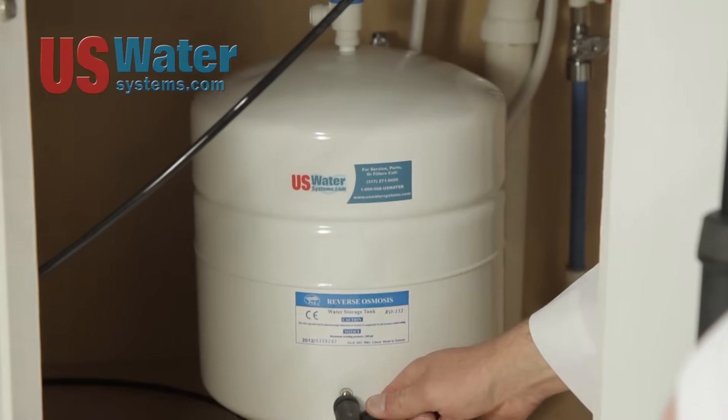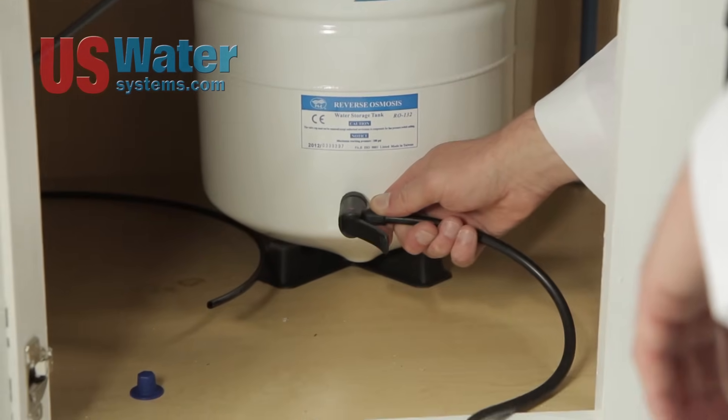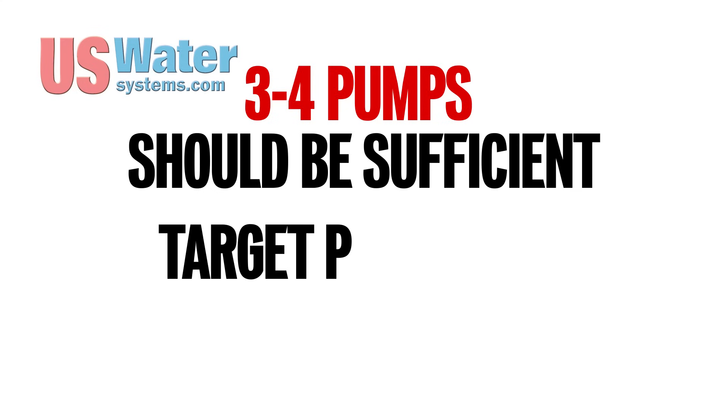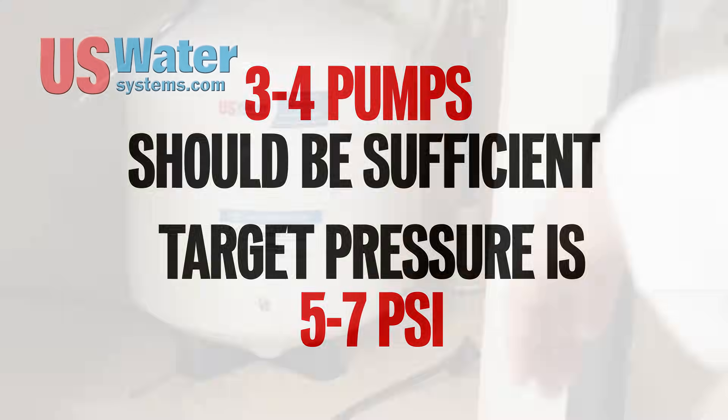Next step is to hook your bicycle pump or your air compressor to the Schrader valve and go ahead and pump it up. After you do three or four pumps you should be fine. Your target pressure is between five and seven psi.